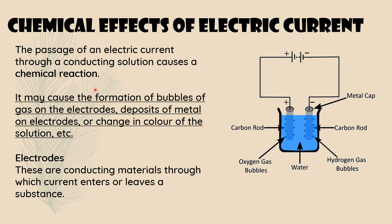The chemical effect of electric current: the passage of an electric current through a conducting solution causes a chemical reaction. Electricity must pass through a conducting solution for a chemical reaction to take place — if the solution is not conducting, electricity cannot flow through it. Conducting solutions such as tap water or water containing any salt, acid, or base conduct electricity, and that is when a chemical reaction takes place.